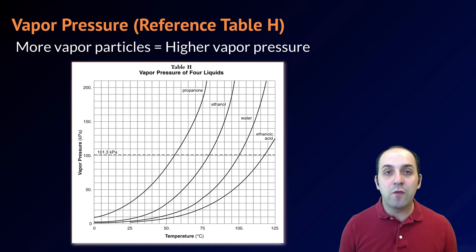When we consider the relationships between these four substances, we see that at any particular temperature, propanone will always have the highest vapor pressure, followed by ethanol, followed by water, followed by ethanoic acid.